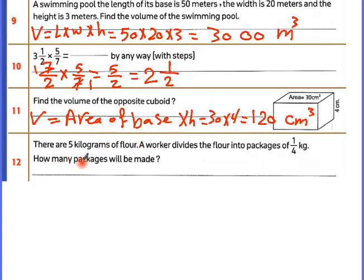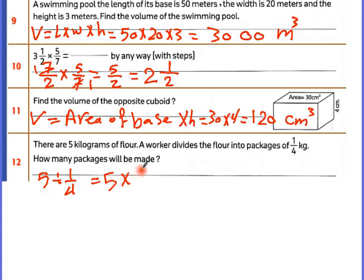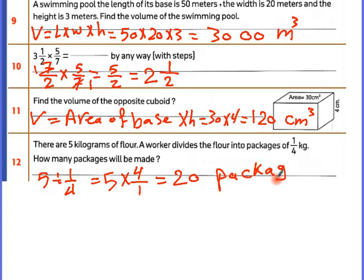There are 5 kilograms of flour. A worker divides the flour into packages of 1 over 4 kilogram. How many packages? 5 divided by 1 over 4 equals 5 times the reciprocal, which is 4 over 1, equals 20 packages.